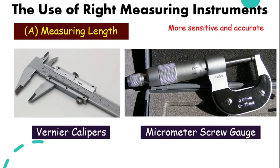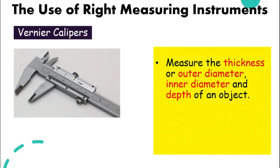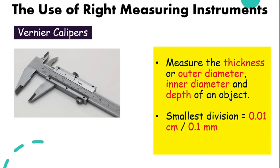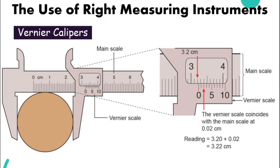Let's look at them one by one. Vernier calipers are normally used to measure the thickness of an object, the outer or inner diameter of an object, and also the depth of an object. The smallest division on vernier calipers is 0.01 cm, whereas a normal ruler is only up to 0.1 cm, so this is a lot more sensitive. Let's look at how to read from the scale — a vernier caliper has two scales.